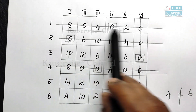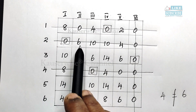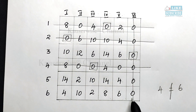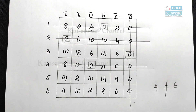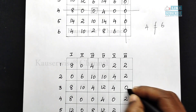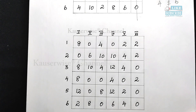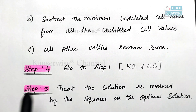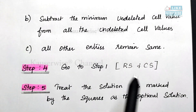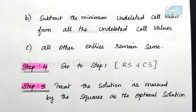All other elements remain the same. Now we need to go to step 4, which says: go back to step 1. Again, we have to do row scanning and column scanning in order to draw the minimum number of lines to cover all zeros. In the first row, we have more than one zero — skip. Second row has only one zero, so mark a square and draw a vertical line. Third row also has only one zero — mark square and draw a vertical line.